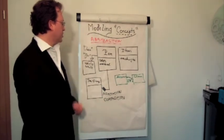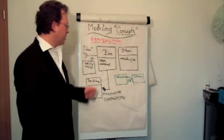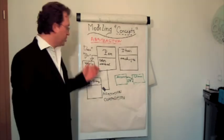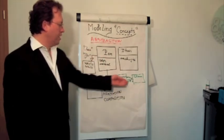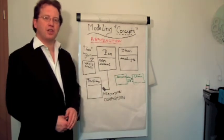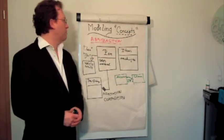So, abstraction, aggregation, composition, here, specialization or generalization. Specialization this way, generalization that way, relationships and so on. These are the key elements you use for modeling concepts.